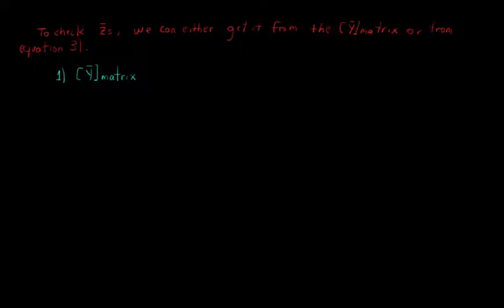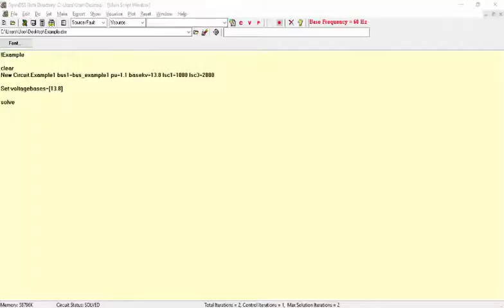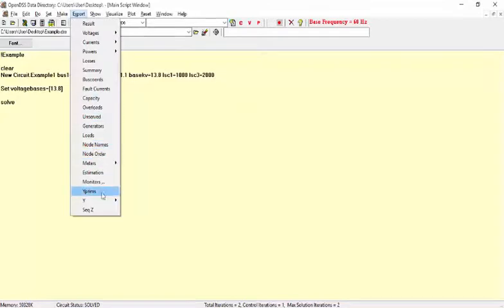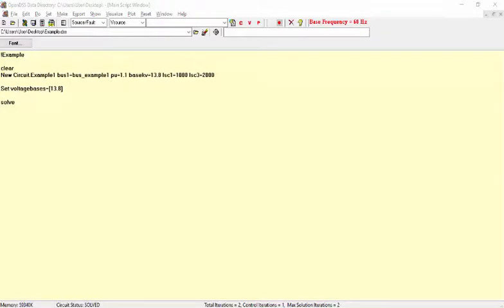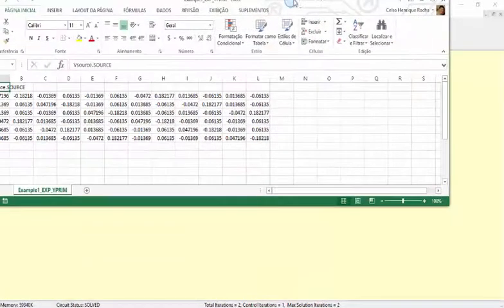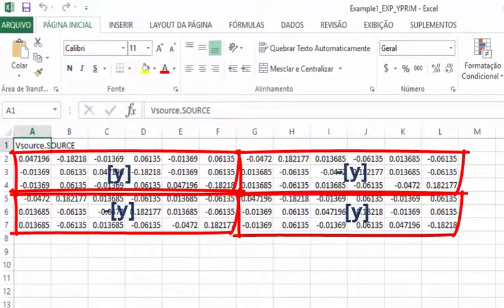The first one is to take it directly from the Y prime matrix of the vSource element, which is a 6x6 matrix with the following format, where the matrix Z 3x3 is the inverse of the small y matrix. To get this matrix from OpenDSS, after solving the circuit, go to export and Y prime. Notice that the matrix shown has 12 columns. It happens because the real and imaginary parts of the elements are in different cells. So if we want to get ZS from this matrix, we must take the inverse of one of these 3x3 sub-matrices.